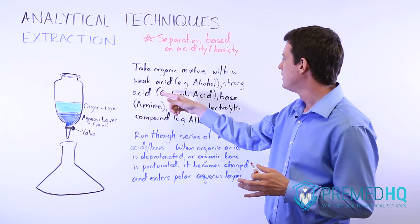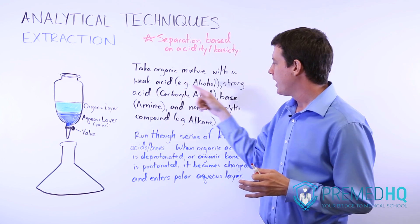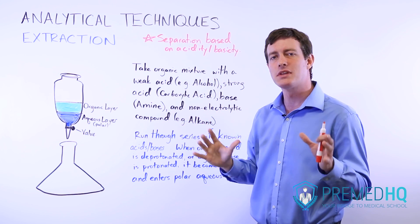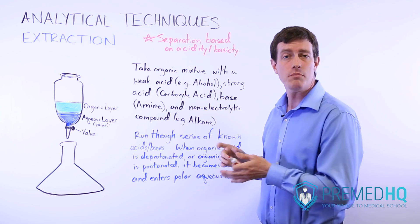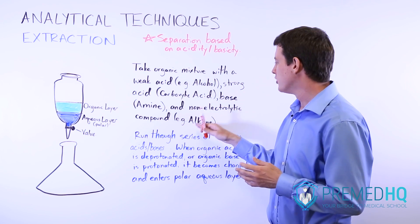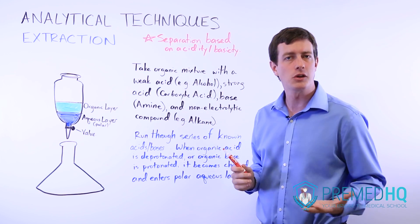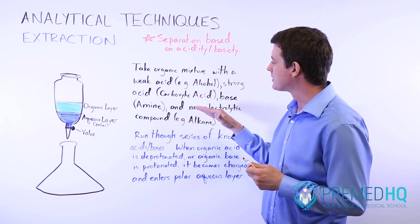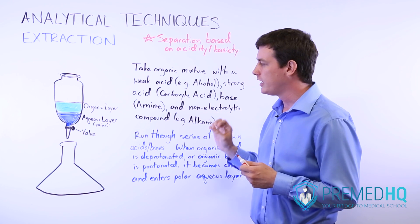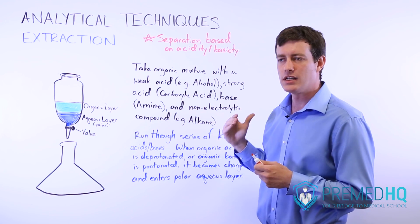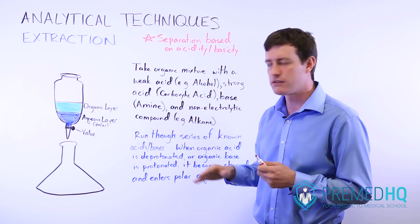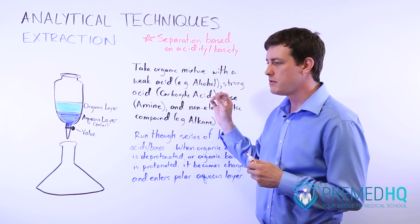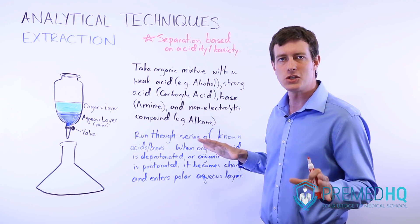So you have a weak acid, a strong acid, a base, and some sort of non-electrolytic compound — something that is neither acidic nor basic, which will often be your alkanes, perhaps a cycloalkane or something like that. It's an organic compound which does not participate in either acidic or basic activity; it doesn't donate or receive protons, and therefore it will not turn charged in any situation.